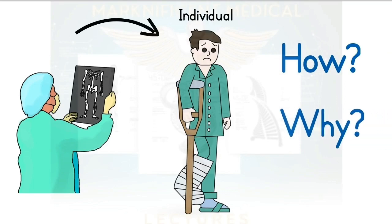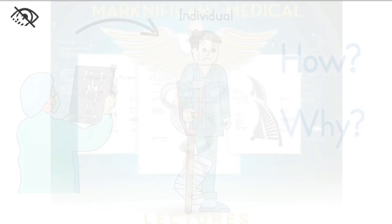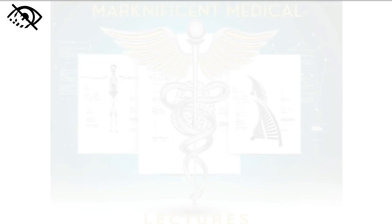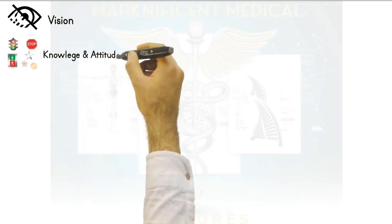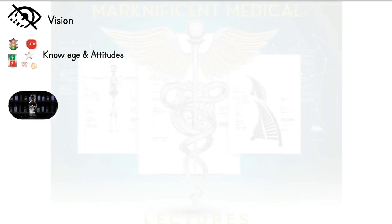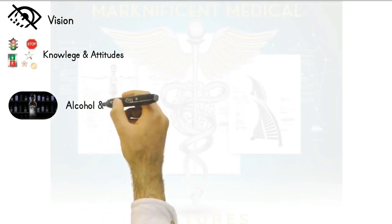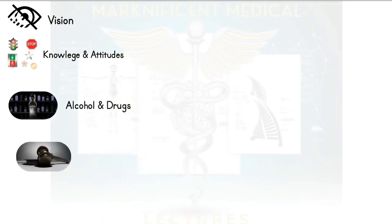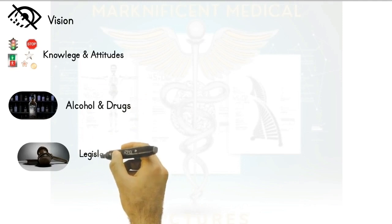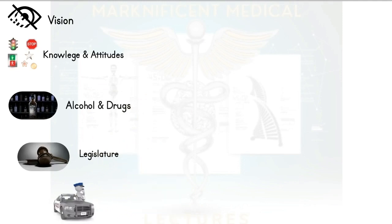The public health approach would be holistic and would focus on figuring out how and why this person had an accident, so that actions can be taken to prevent it from happening again. For example, why did he have the accident? Was there a problem with his vision? Was it poor knowledge of driving skills, or bad attitudes towards driving? Was he under alcohol or drugs when he was driving? Are there laws against this and resources to enforce it?